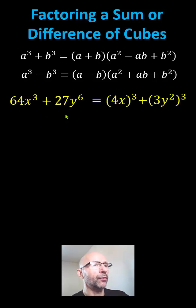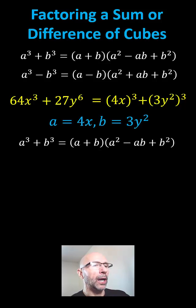And we do because the cube of 4x equals 64x cubed, and the cube of 3y squared equals 27y to the sixth. Now we apply the sum of cubes formula, where a equals 4x and b equals 3y squared.